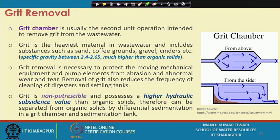Once the large floating materials have been retained, the next unit is the grit chamber. The grit chamber is usually the second unit operation, intended to remove grit from the wastewater. Grit is the heaviest material typically, and includes substances such as sand, coffee grounds, gravel, and cinders with significantly higher specific gravity. The typical specific gravity of grit materials is of the order of 2.6, with a range between 2.4 to 2.65, which is much higher than that of typical organic solids.